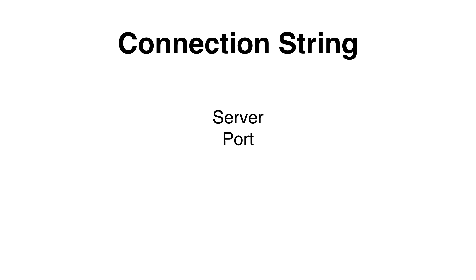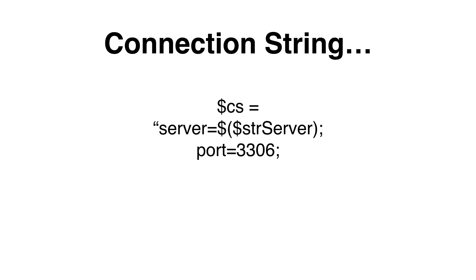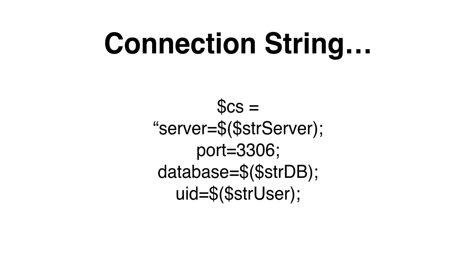The connection string we will need to connect to our MySQL instance must consist of the following components: the DNS name or IP address of the server; the port if the server does not use the default port 3306; the name of the database we would like to connect to; the user that has been granted access; and the password. We should store the connection string in a variable. The server will have our server DNS name or IP address, the port, the database name, the username set to uid, and the password set to pwd. Make sure that you add a semicolon after each setting.